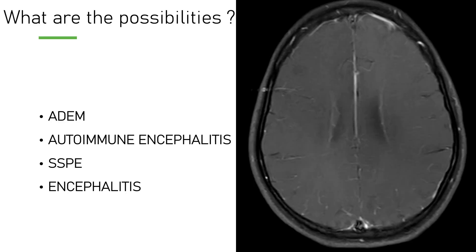The diagnostic possibilities in our mind are these four. Acute disseminated encephalomyelitis, because there is some history of fever and infection in the last month. Autoimmune encephalitis — we ordered that panel as well, which came negative later. Subacute sclerosing pan encephalitis, based on the myoclonic jerks and some vague history of measles in childhood. Direct encephalitis from virus is less likely because there are no obvious areas of restriction on diffusion and the patient is not that sick. ADEM also usually does not present with such large areas of patches. So the leading possibility we considered is SSPE.